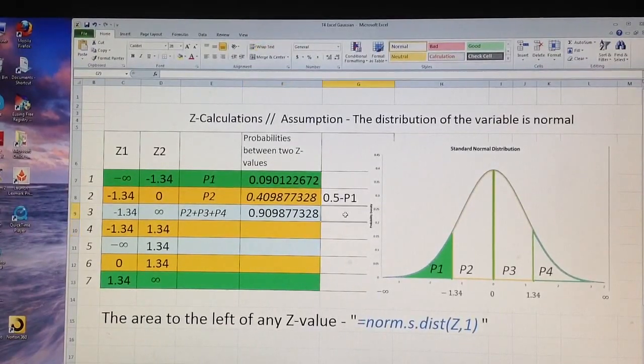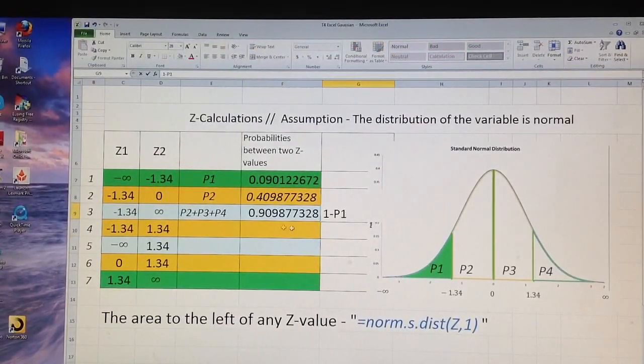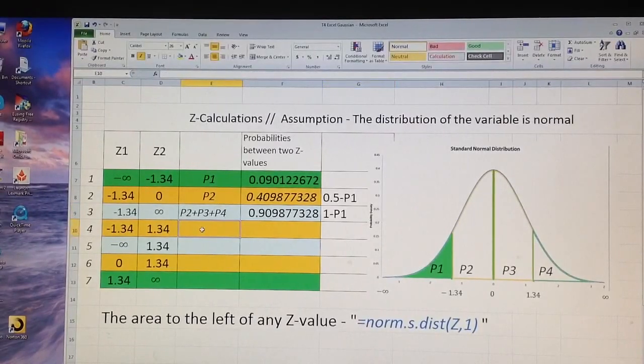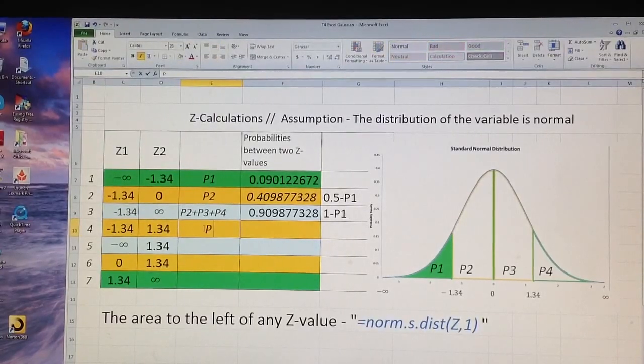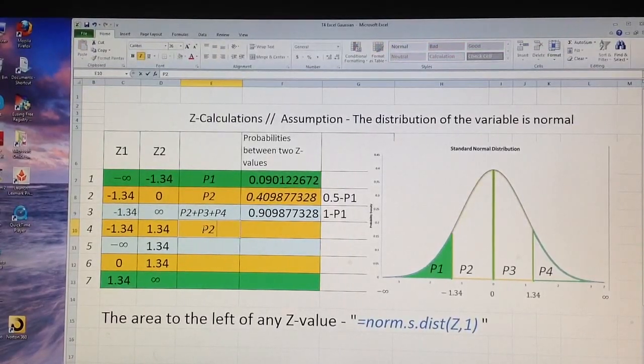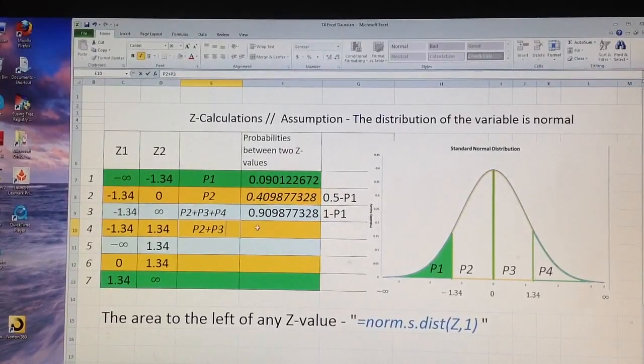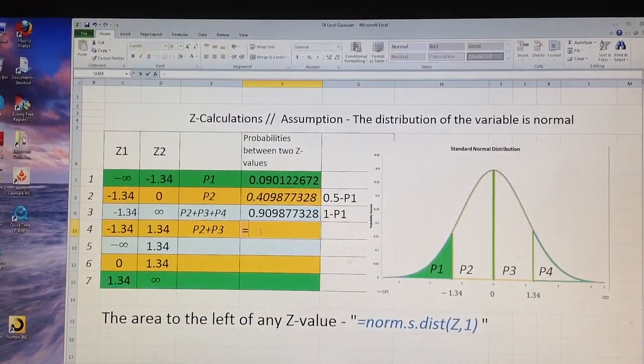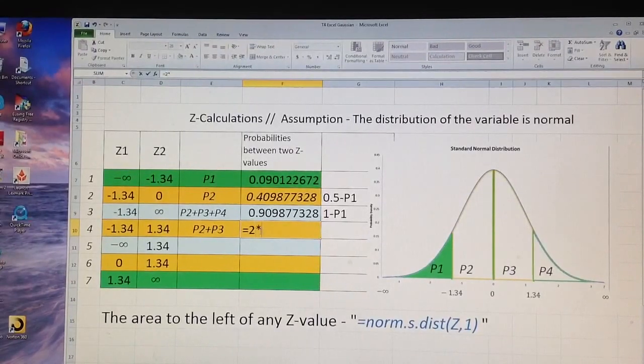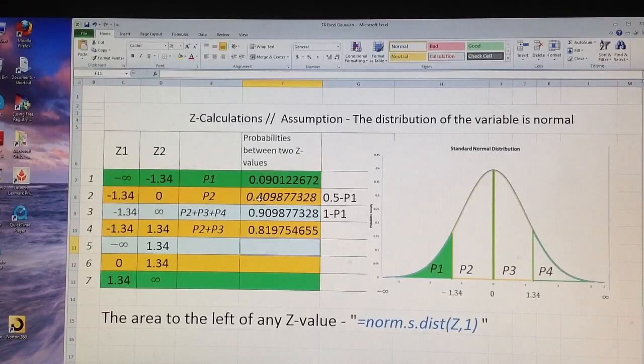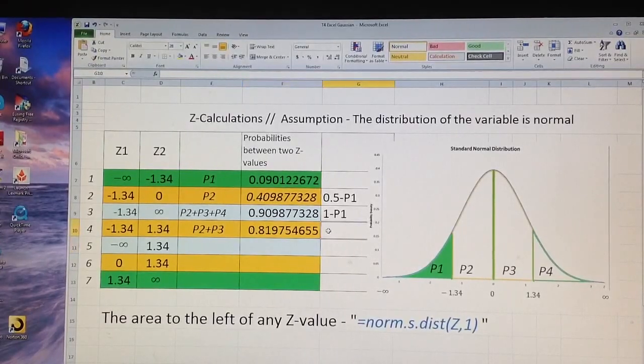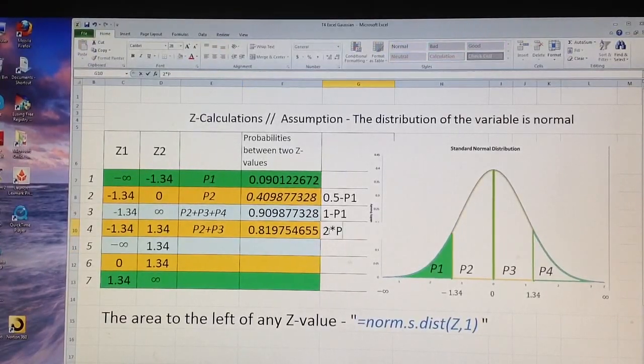So let me write it down, 1 minus P1. And then the area between the two scores, negative 1.34, this 1.34 is P2 plus P3. This area also is very easy, because it is equal twice the area of P2, and I will write here 2 times P2.